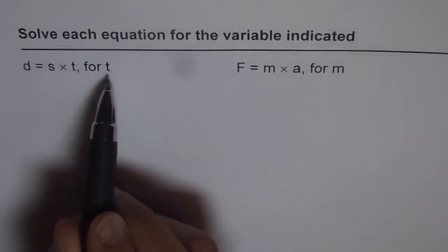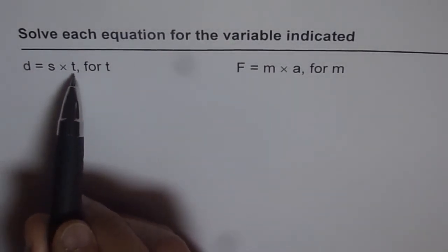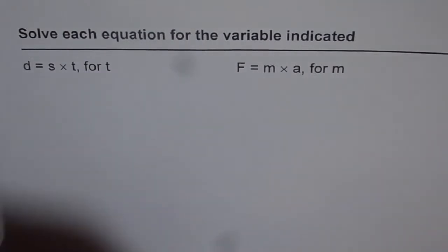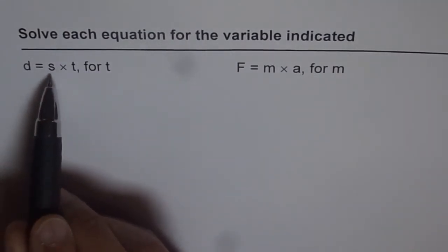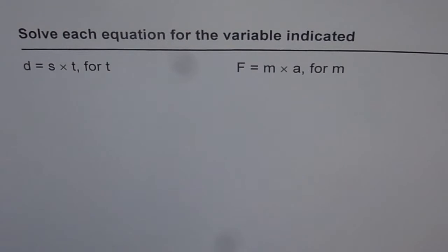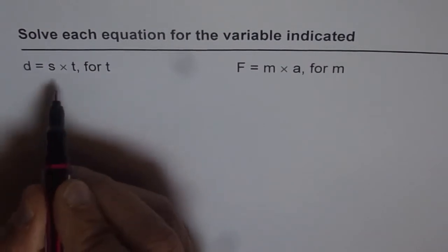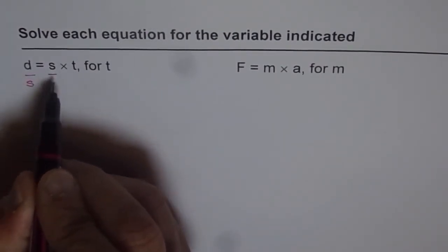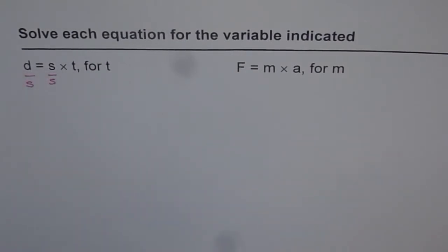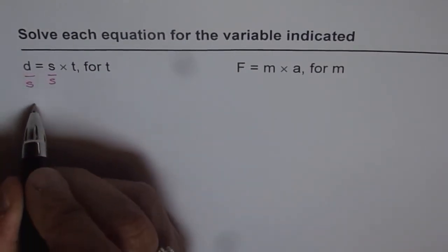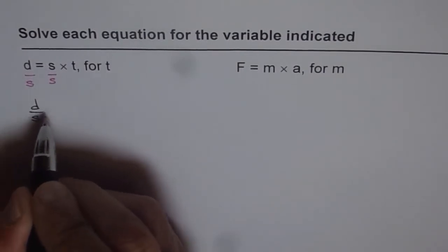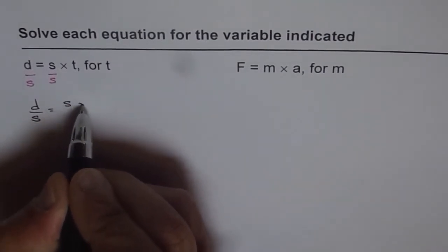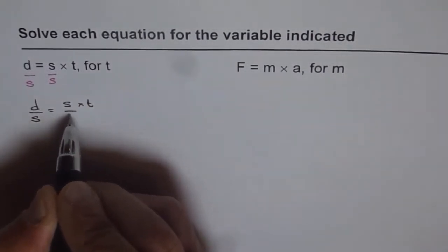Isolating for t simply means that we should have t here and nothing else. So how can I get rid of s? S is being multiplied to time t, so the way to get rid of s is to divide both sides by s. If we do that then we can isolate t. So the next step should be d divided by s equals s times t divided by s.